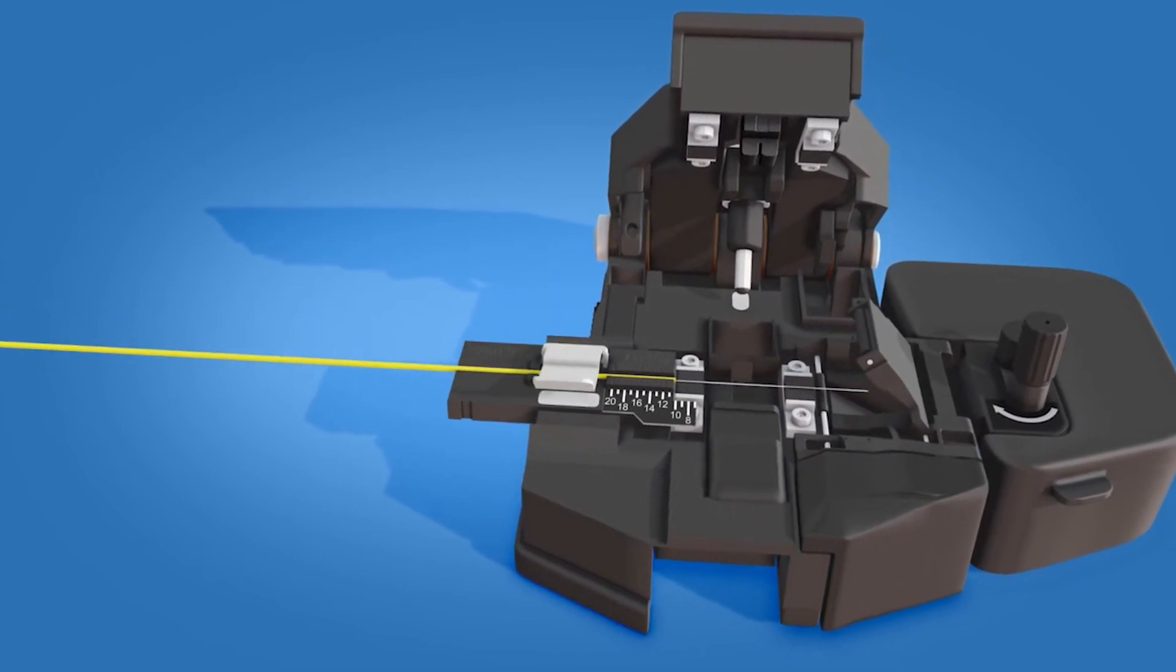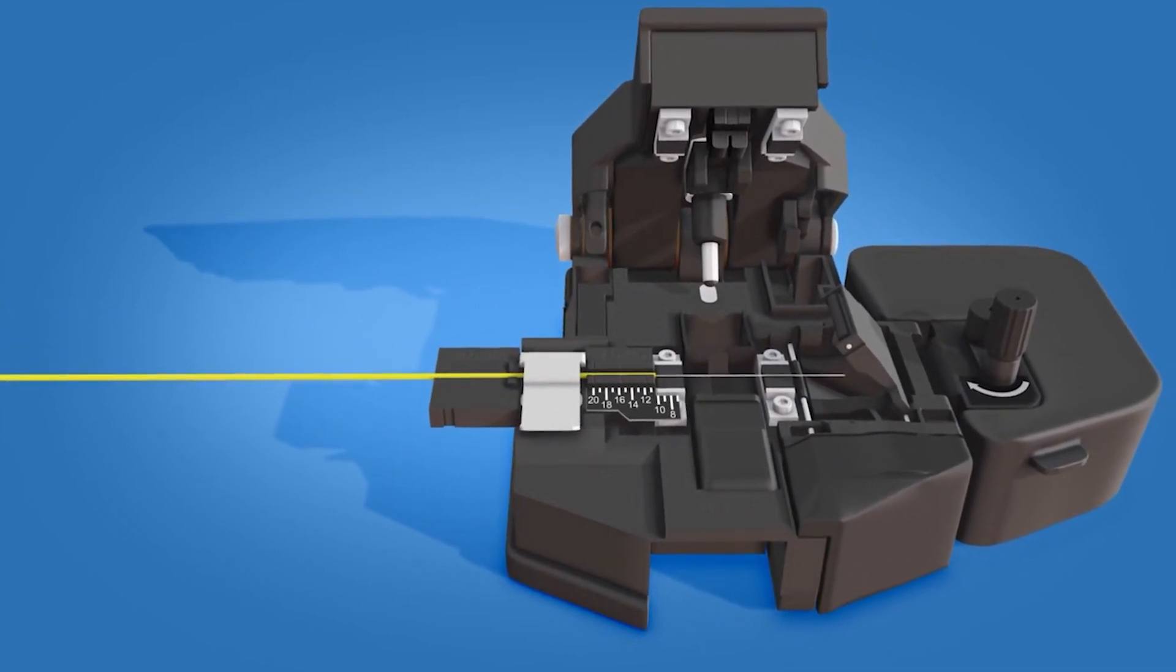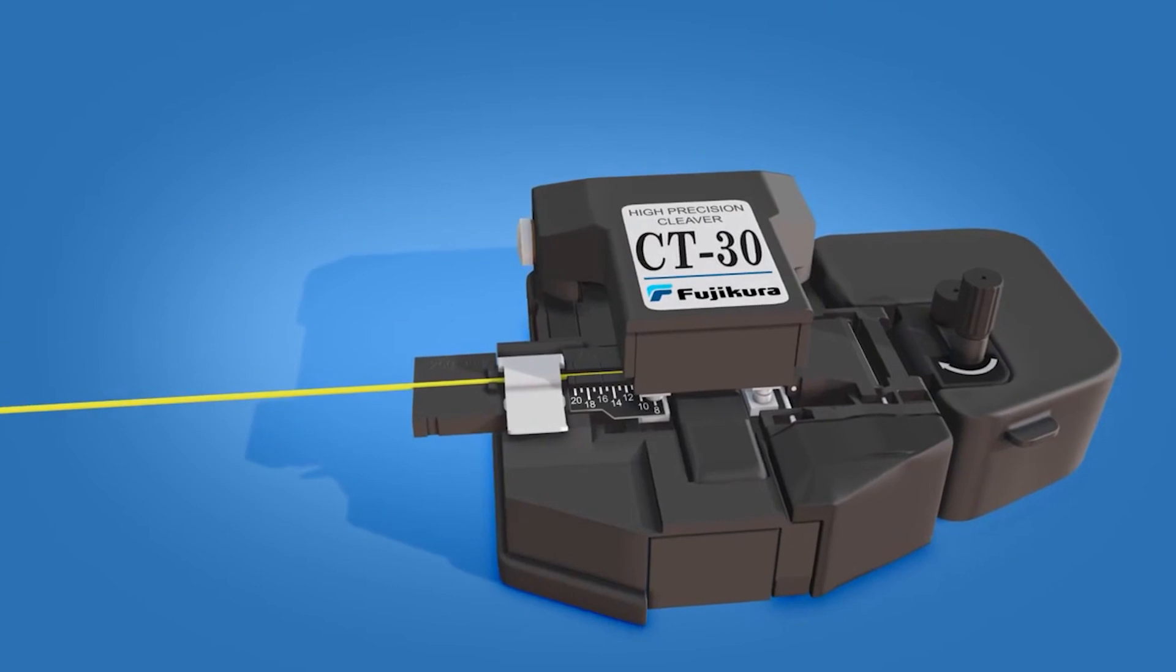Close the clamp. Push the cutting lever downward to cleave the fiber.